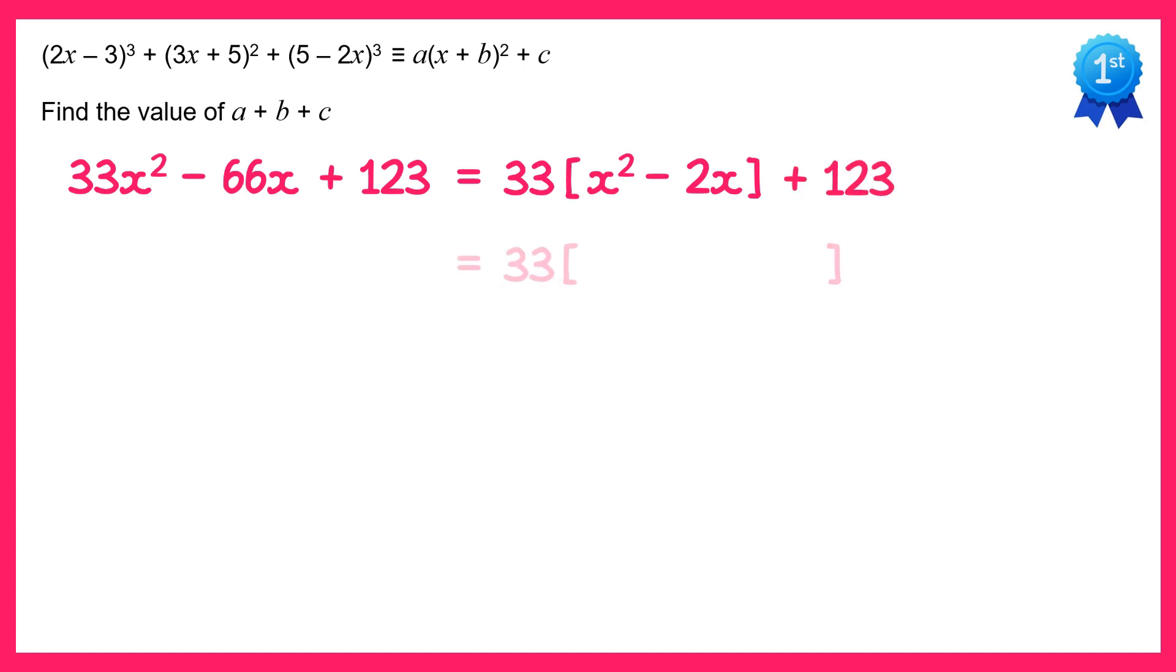Next we write 33 and then this bracket, and inside the bracket we've got x squared minus 2x. We're going to complete the square on that. So that would be x minus 1 all squared, and then we square that negative 1 which is 1 and subtract that, so subtract 1, and then we've got this plus 123 at the end.